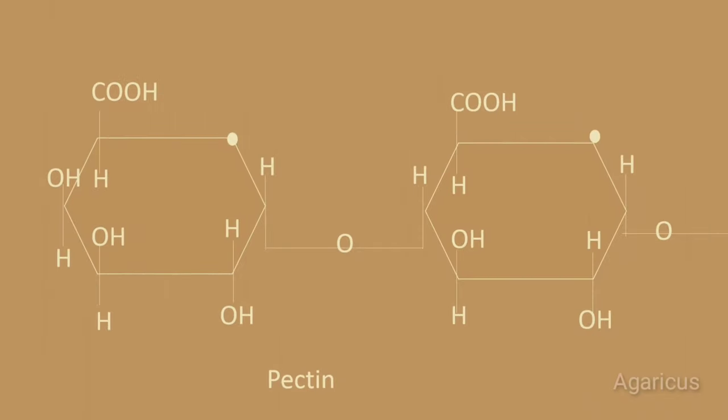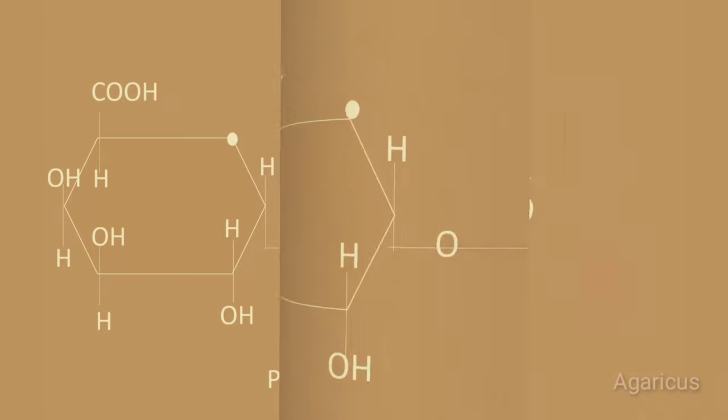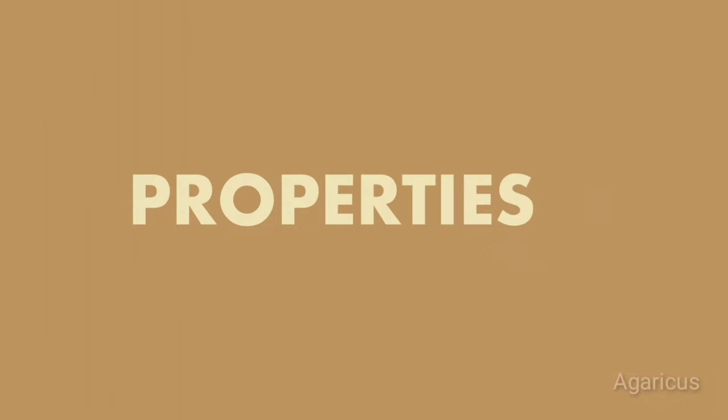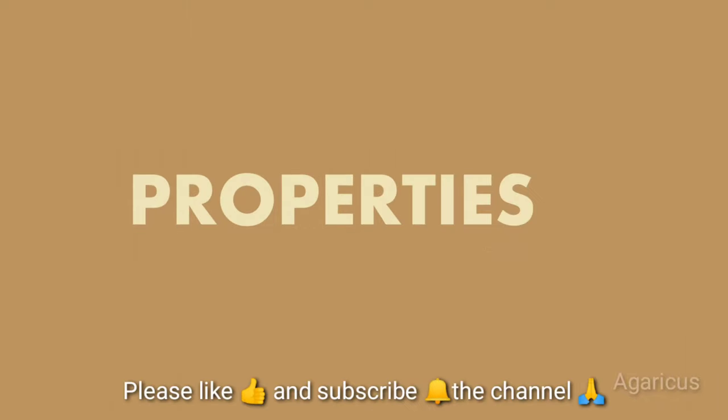Here is the structure of pectin. The linkage is alpha-1,4. Next we can discuss the properties of pectin.